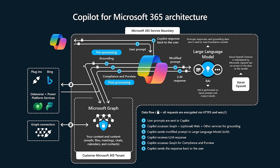Then it can go and find information. The first step is it can find information from the web, from plugins if you've got those wired up, and it can also go to the Microsoft Graph — which can be extended using Graph Connectors. All of this is based on information you explicitly have access to. It then sends that information to a large language model, which takes both your prompt and the retrieved information from the Graph, plugins, or Graph Connectors, and presents a response back.